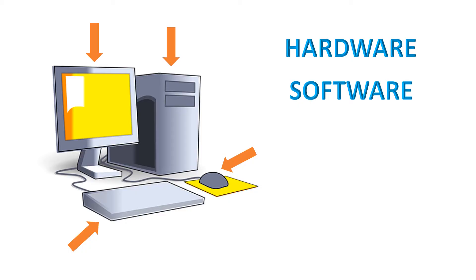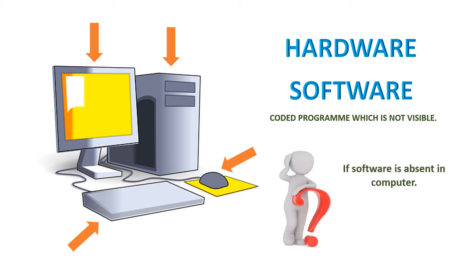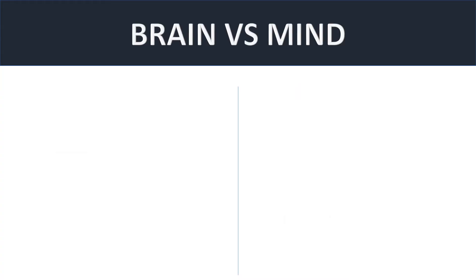Software is the coded program which is not visible. Can you operate your computer without software? What will happen to your computer system if software is not present? Will you be able to operate it? Is it of any use? This is why I am telling you about the computer system — we will understand the difference between mind and brain with the help of this same example, correlating brain and mind with hardware and software.